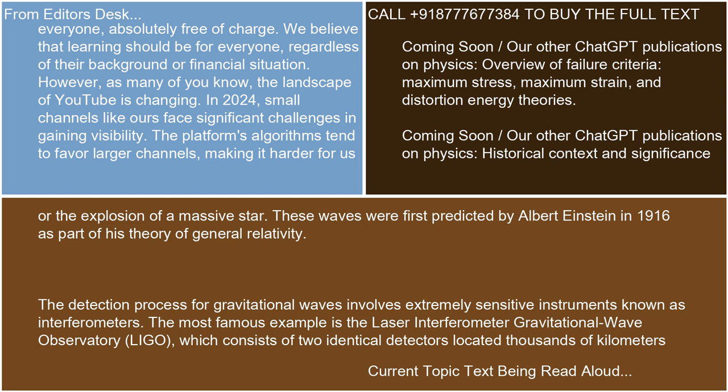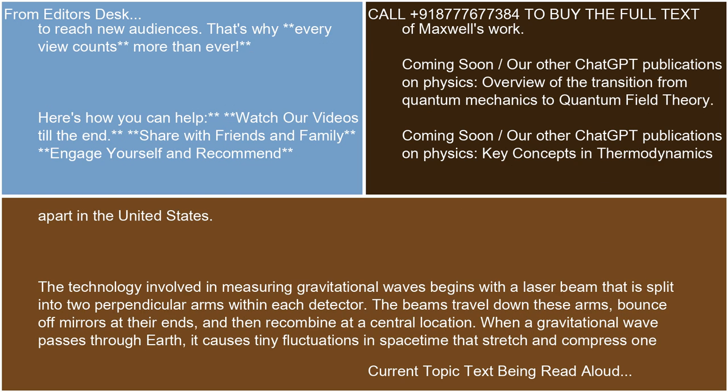The detection process for gravitational waves involves extremely sensitive instruments known as interferometers. The most famous example is the Laser Interferometer Gravitational Wave Observatory, LIGO, which consists of two identical detectors located thousands of kilometers apart in the United States.